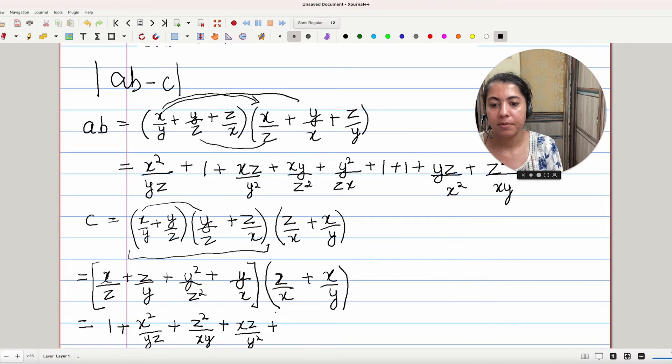Next term will be, here we'll have 1 Z cancelled, so Y²/XZ plus 1 Y will be cancelled, that will give us XY/Z². And then multiplying these two will get YZ/X² plus 1.